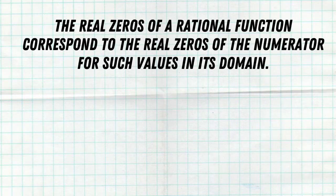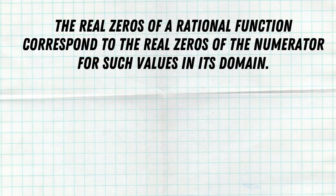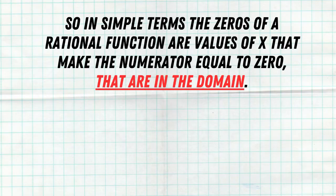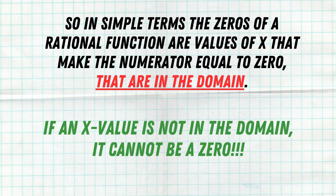The real zeros of a rational function correspond to the real zeros of the numerator for such values in its domain. Pretty simple sentence, but it has a lot of meaning to it. First, we know that real zeros come from the numerator of a rational function, but they have to be in the domain. And that's the one part that a lot of kids overlook. So in simple terms, the zeros of a rational function are values of x that make the numerator equal to zero that are in the domain. If an x value is not in the domain, it cannot be a zero.